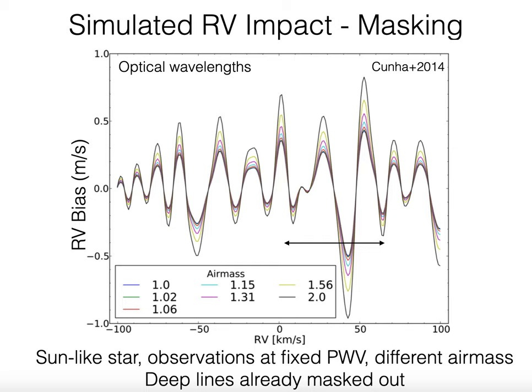There have been a number of nice papers in the literature discussing this effect. For example, one by Punadol in 2014 considering observations of a sun-like star at fixed precipitable water vapor and different air masses, where the deepest water lines have already been masked out. These authors find that depending on the barycentric velocity at the time of observation, this can be more than half a meter per second effect in the optical—a substantial effect.